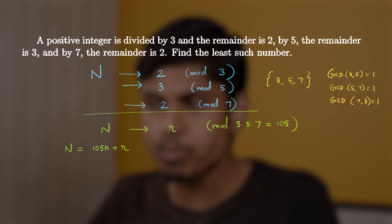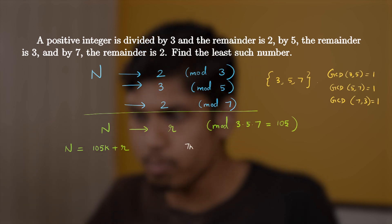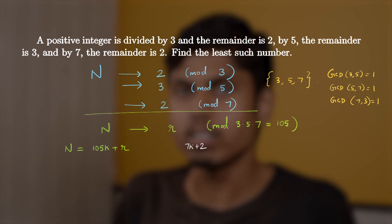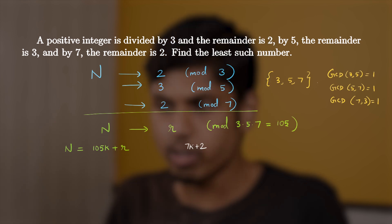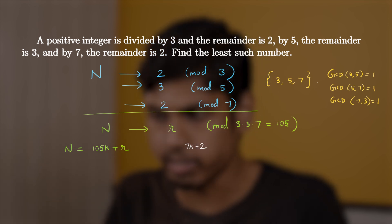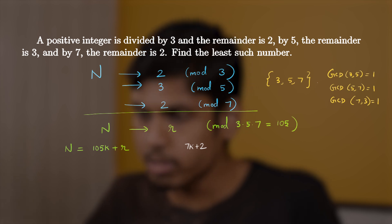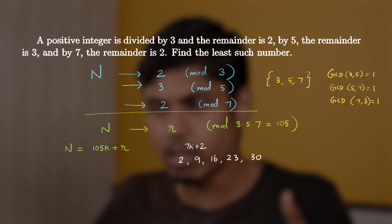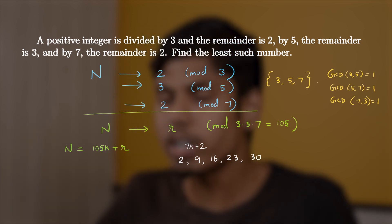First notice that n must be of the form 7k plus 2, because it leaves a remainder 2 when divided by 7. We know that k is the quotient when it is divided by 7. So the numbers of this form are 2, 9, 16, 23.